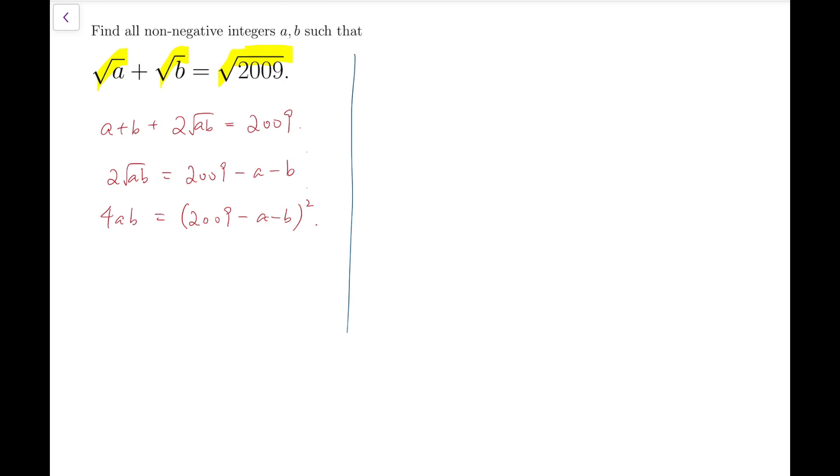What I'm going to try is to remove the surds in another way. Maybe I can try to move some of the terms to the other side. Say, √a equals √2009 minus √b, and then square both sides on this equation. So a equals 2009 plus b minus 2√(2009b). Now, from this, I can say that 2√(2009b) equals 2009 plus b minus a.